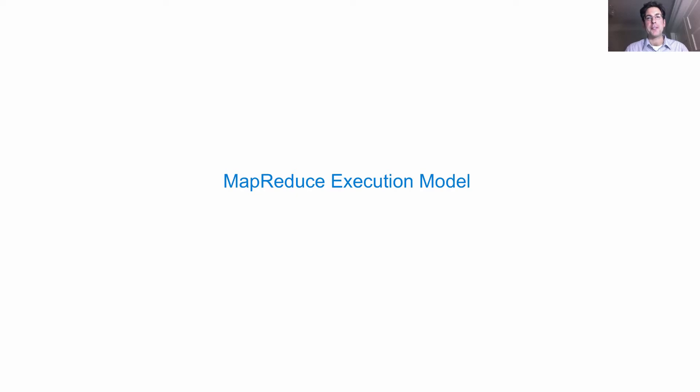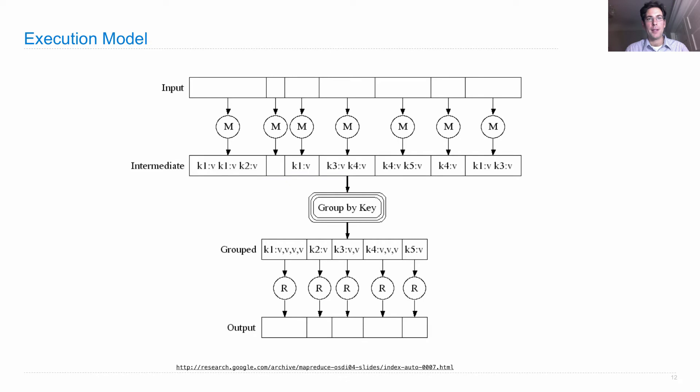Let's look at the MapReduce execution model as it was diagrammed in the original research paper that described the framework. The execution model in the abstract sense looks like this. You have input which is sharded into groups arbitrarily.